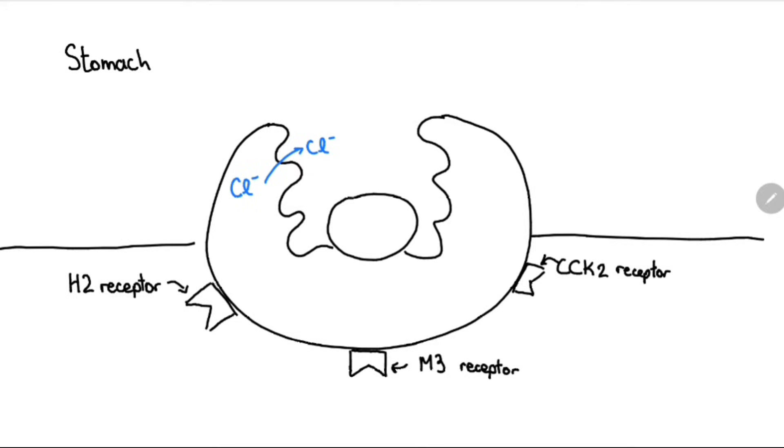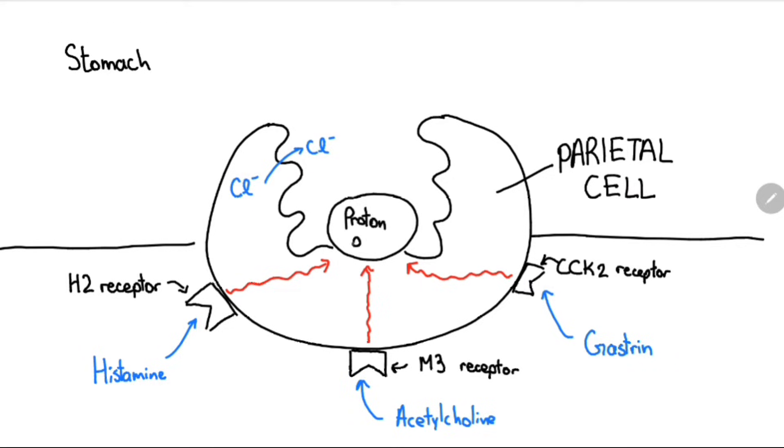In our stomach, the parietal cells are responsible for the production and release of stomach acid. When stimulated by gastrin, histamine, or acetylcholine, the parietal cells release protons into the stomach via the proton pump.